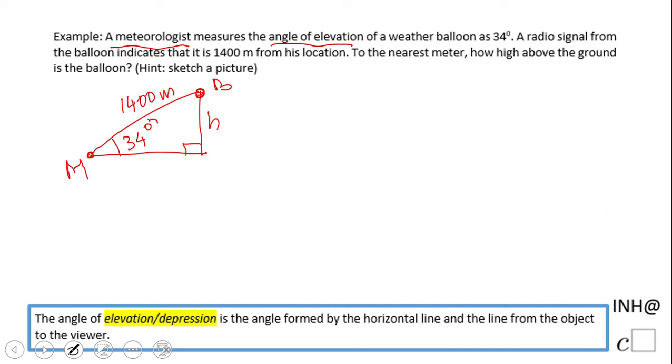We have a right triangle where we have an angle, we're looking for the opposite leg, and we have the hypotenuse. So the function will be sine. Sine of 34 degrees equals the opposite (H) over the hypotenuse (1400).